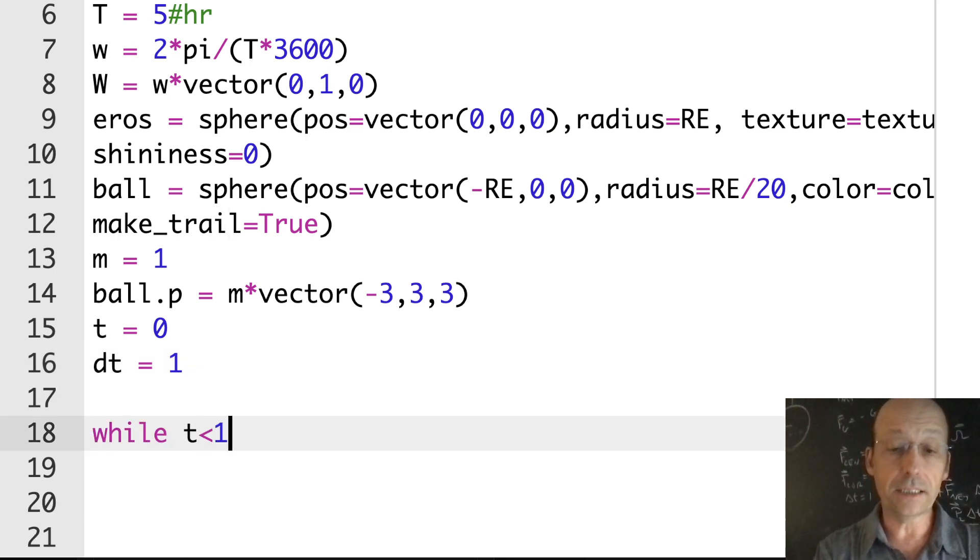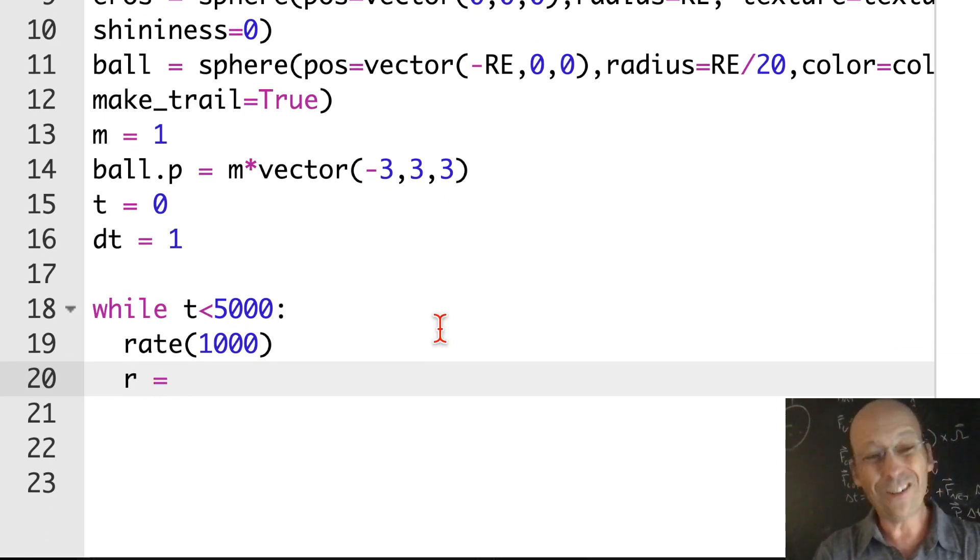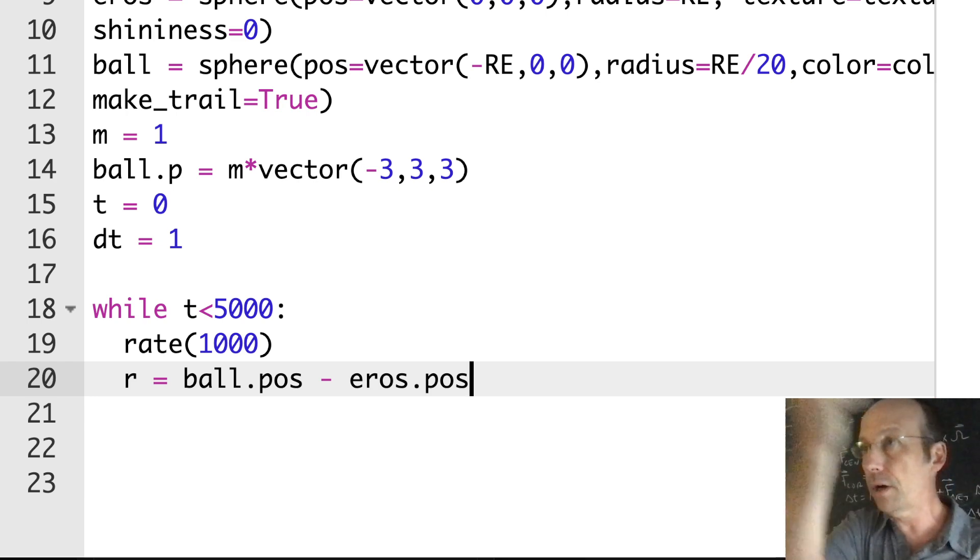We are ready to rock and roll. I'm going to say while t is less than 5000, rate of 1000. I always like to start off with a time loop because I know time is going to get to 5000. It may never stop otherwise. So I like this because I know it's going to stop, and I can change it later. The first thing I'm going to do is calculate r: ball.pos minus eros.pos. This is the vector from the center of Eros to the ball. I like to do that because if I ever move the planet, this will still work. I don't want to just assume the planet is at the origin.